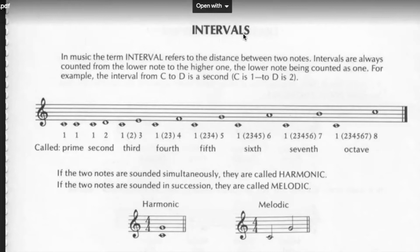to the higher one. The lower number being counted as one, for example, the interval from C, which would be our dough, to D, which would be our ray, is a second. So C is one, that would be dough, and D, which would be ray, would be our second. So that would be a second.